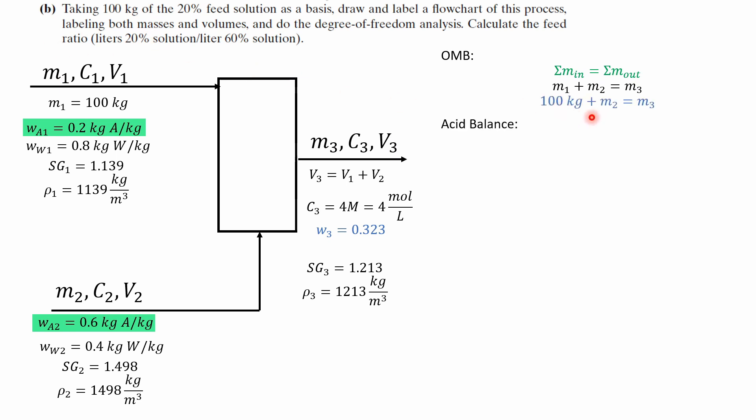Now for the acid balance we can apply the same exact equations but this time we need to do it in terms of mass fraction. The mass fraction of the species in the stream times the mass of the stream is going to be equal to the mass of the species in that stream. This is from the definition of mass fraction.